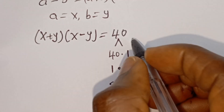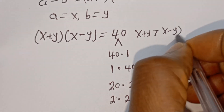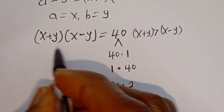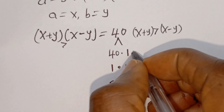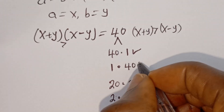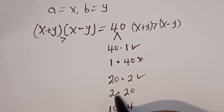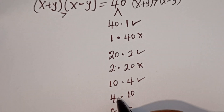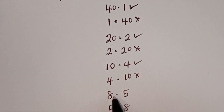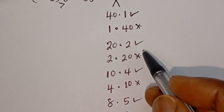Note that x plus y is greater than x minus y, so the first factor must be greater than the second. Checking our pairs: 40 greater than 1 — true; 20 greater than 2 — true; 10 greater than 4 — true; 8 greater than 5 — true. We have 4 valid cases.